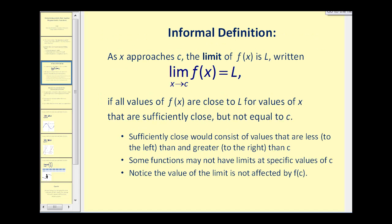Let's review the informal definition of a limit. The limit as x approaches c of f(x) is equal to L if all of the values of f(x) are close to L for values of x that are sufficiently close but not equal to c. Sufficiently close would consist of values that are less than or greater than c, often to the left and to the right of c.